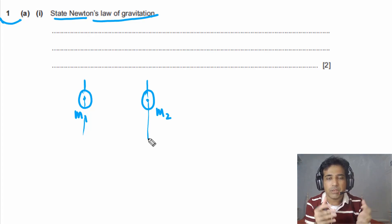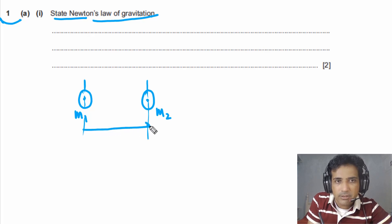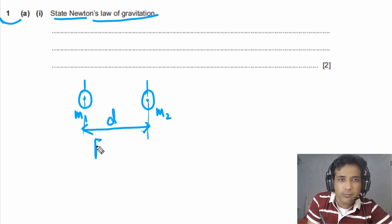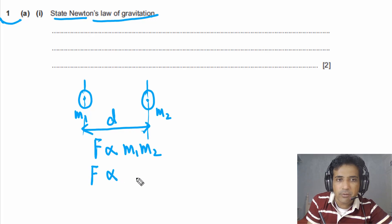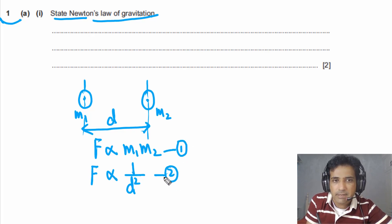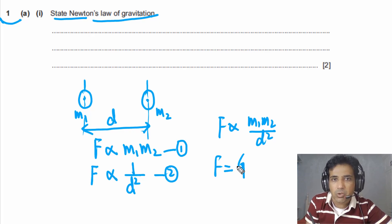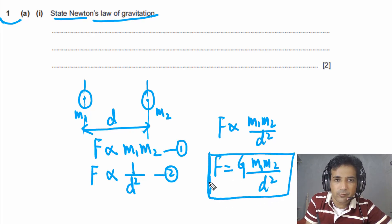Focusing on how to state Newton's law: if the distance between the centers is d, then the gravitational force is directly proportional to the product of the masses, and inversely proportional to the square of the separation between the centers. In equation form: F = G·m1·m2 / d², where G is the universal gravitational constant. This equation can be used to calculate gravitational force on any object.